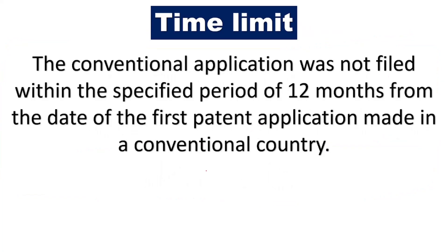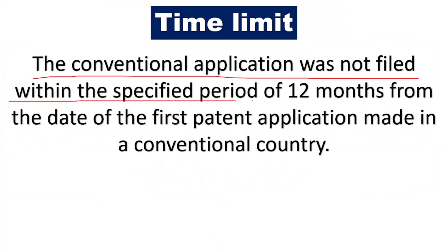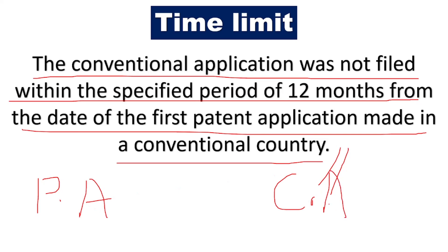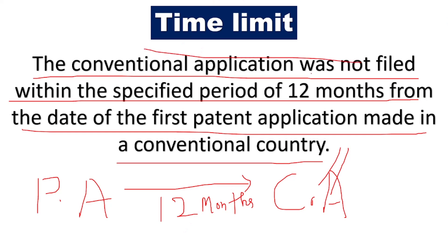The next ground is time limit — the conventional application was not filed within the specified period of 12 months from the date of the first patent application made in a conventional country. After filing the provisional application, the next step is to file the complete application, as we have seen in our previous video. The applicant has 12 months to file the complete application. If they fail to file within that 12-month duration, it becomes a ground for pre-grant opposition.